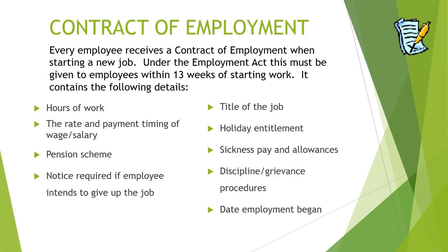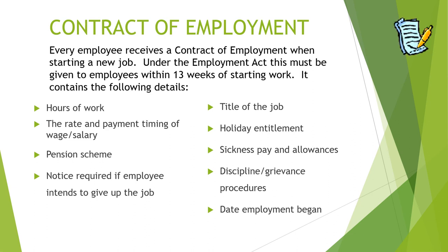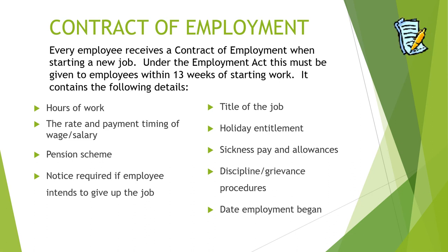When all of this is done and the person has been offered the job, they will receive a contract of employment. By law, under the Contracts of Employment Act, an employee must receive a contract within 13 weeks of starting work. The contract lists details such as hours of work, rate of pay or salary, pension scheme details, notice required when leaving, job title, holiday entitlement, sick leave provisions, any disciplinary or grievance procedures, and when employment begins.